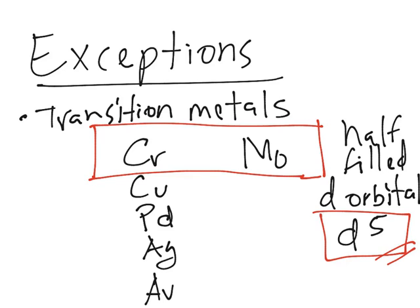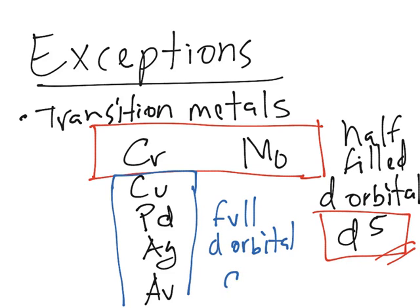And then for these four they like having a full d, d10. And what's the case for them being an exception is that not all of them will have a d10 because none of the elements have the same configuration. So what they do is they steal the nearest electron to attain that goal.